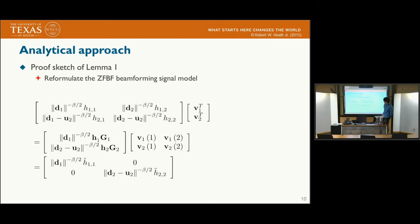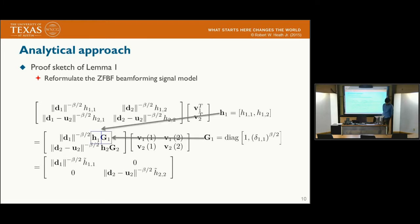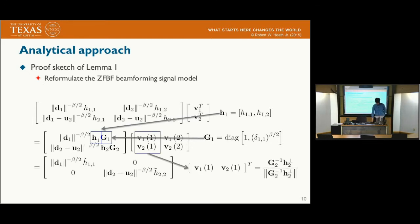Now we introduce the proof sketch for Lemma 1. We reformulate the zero-forcing beamforming signal model. The key idea is that we can separately write the channel fading matrix and the geometric matrix. Each beamforming vector is formed by the multiplication between the inverse of the geometric matrix and the orthogonal vector of the channel fading matrix, so we can write this beamforming vector as the product of the geometric matrix, the whitening matrix, and the orthogonal vector of the channel fading matrix.